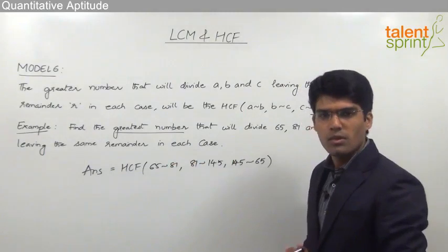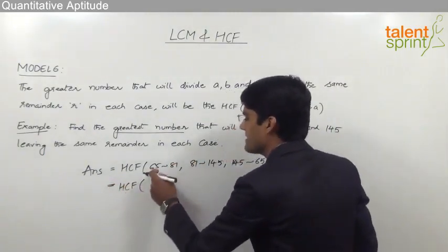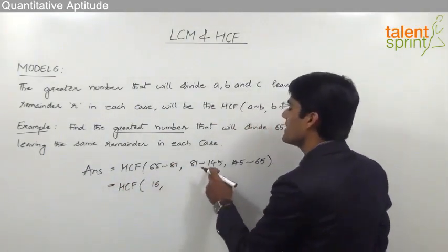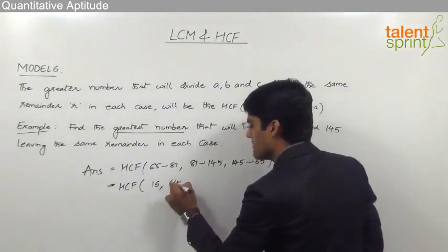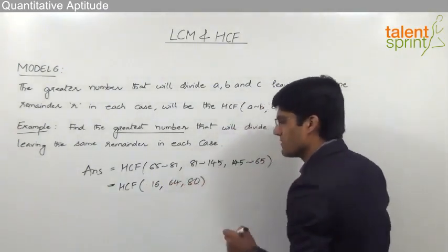Here it can be taken as HCF of 65 difference 81 is equal to 16, 81 difference 145 is equal to 64, and 145 difference 65 is 80. So the final answer here should be the highest common factor of 16, 64, and 80.